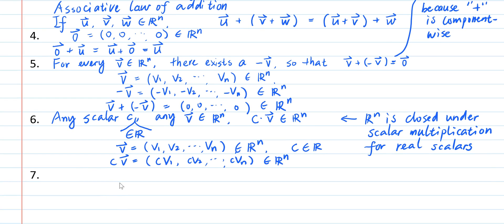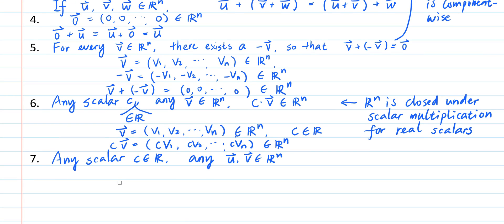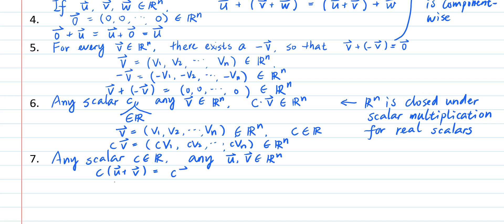The seventh property says for any scalar c, again a real scalar, and any two elements u and v of R^n, the distributive law of scalar multiplication holds. So the scalar multiple of c and the sum of u and v is equal to the sum of the scalar multiple of u and the scalar multiple of v.